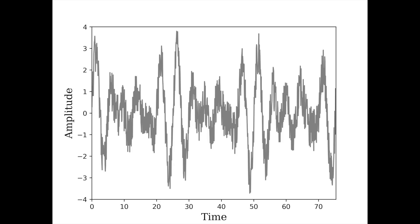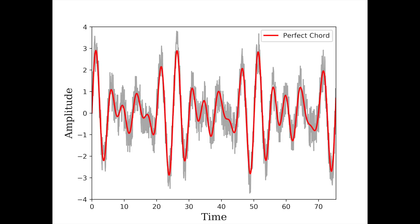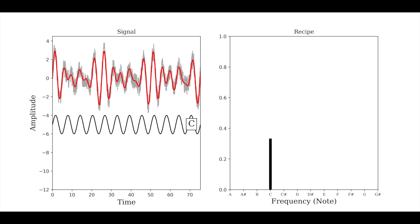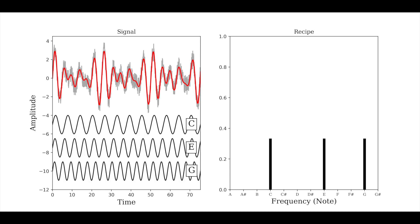Now if our signal was a perfect chord, made up of just three perfect notes, the Fourier transform would output the frequency of the three notes and the amplitude or loudness of each. This is the recipe we would need to reconstruct the chord.